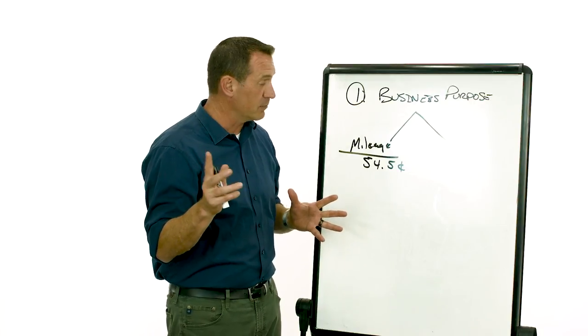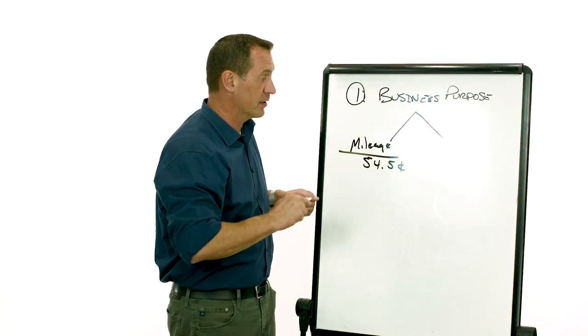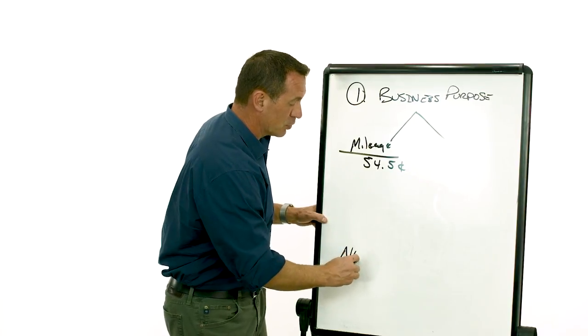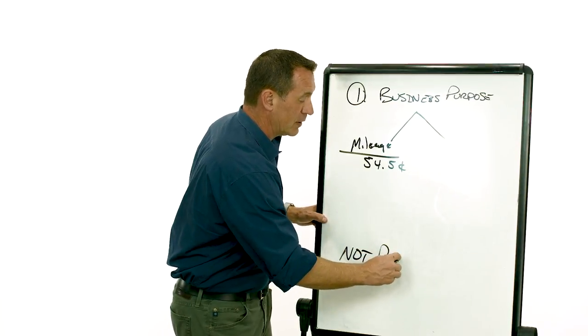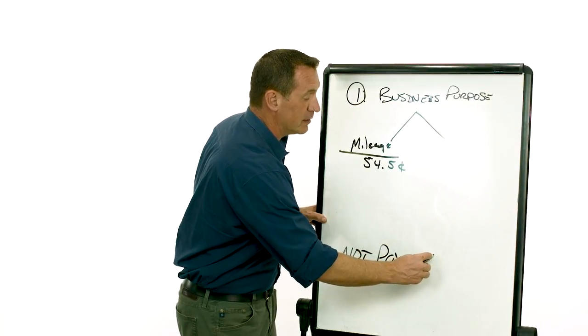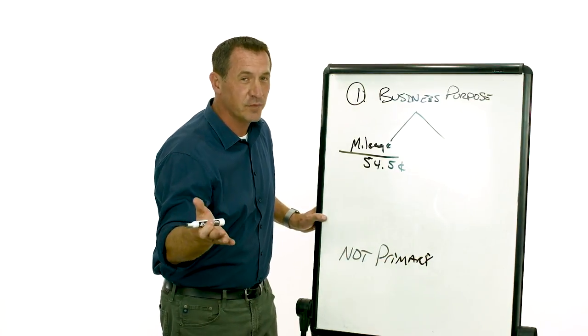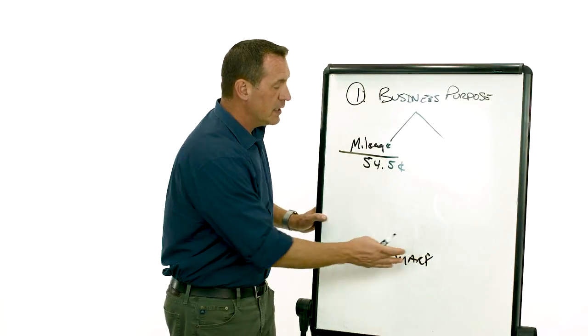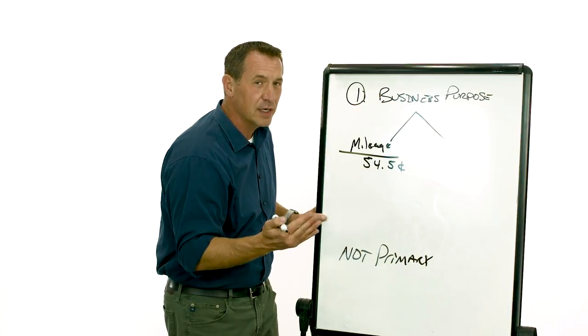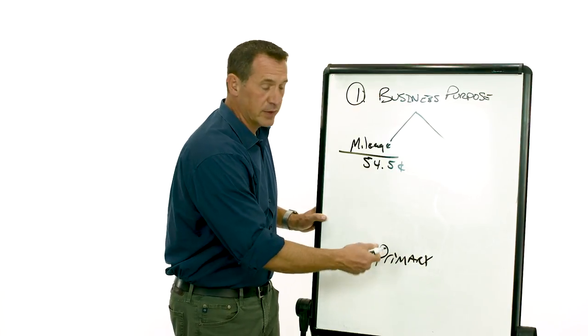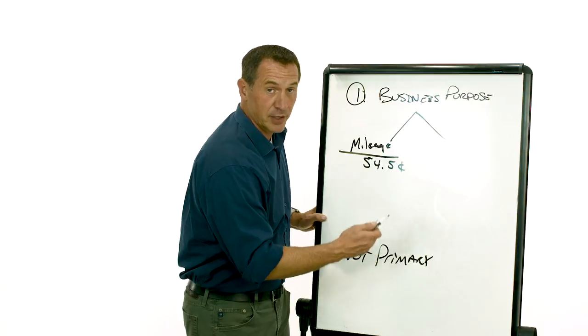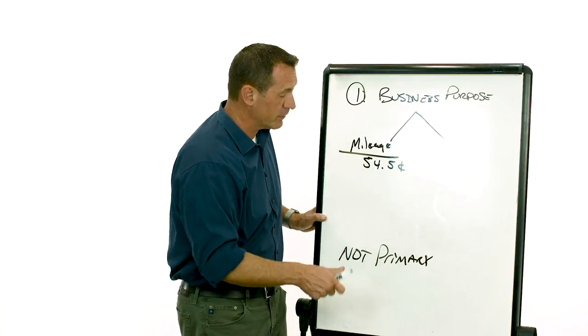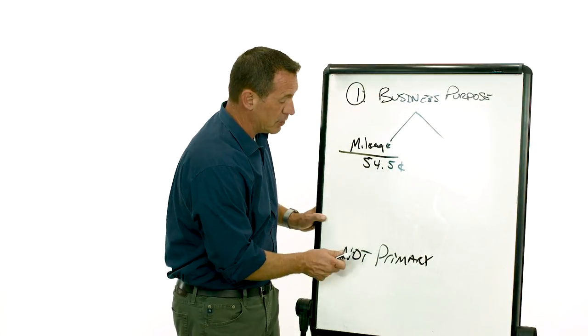So any business miles to get to and from your primary home, you're off to the races. Now notice, I put a little caveat in here. This is not your primary residence. So any of you that are full-time RVers, watch some of my other YouTube videos. Type in Mark Kohler RV and you can look at some of the more detailed explanations of how you deal with this when the RV is your primary residence. So you're a full-time RVer, but in this example, I'm saying you're not.